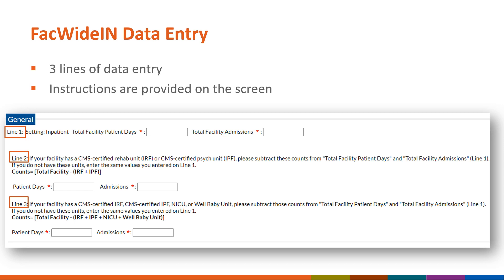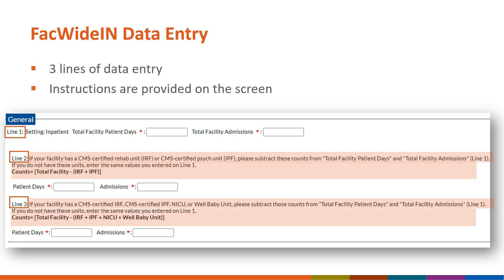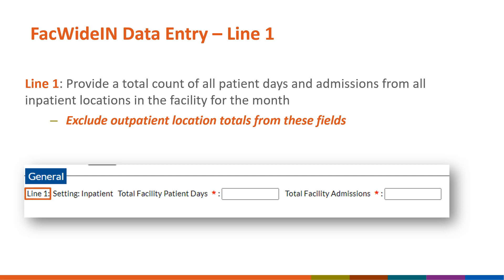Note that there are three formulas listed in the instructions for lines 2 and 3 so that users can see exactly how to calculate the correct patient days and admissions on those lines. The first line of the denominator form represents the total number of patient days and admissions from all active inpatient locations in your facility for the given month. This excludes counts from outpatient locations or any location that is enrolled in NHSN as a separate facility.